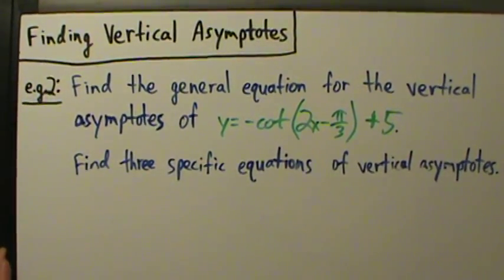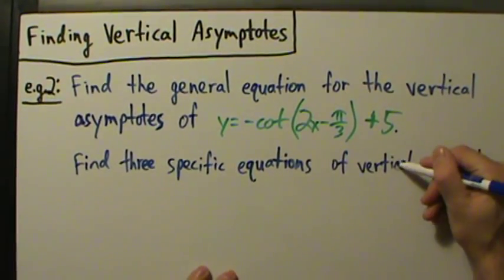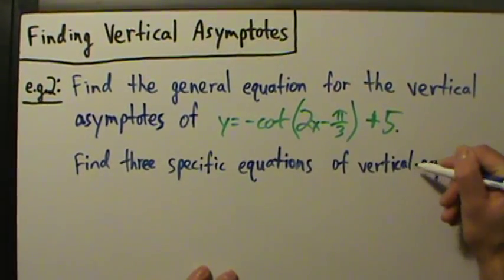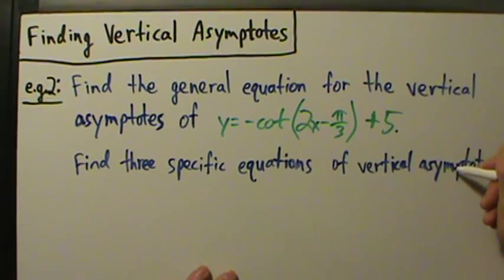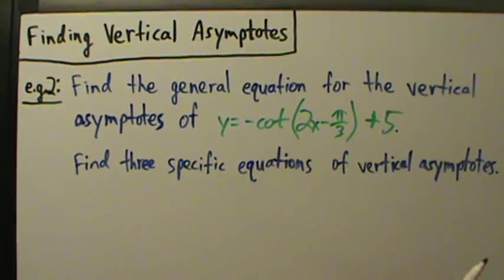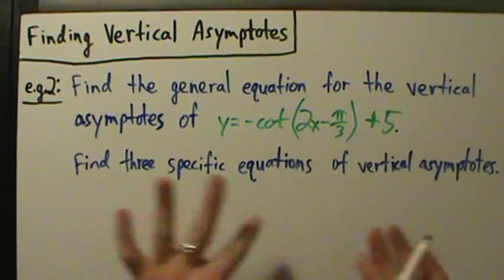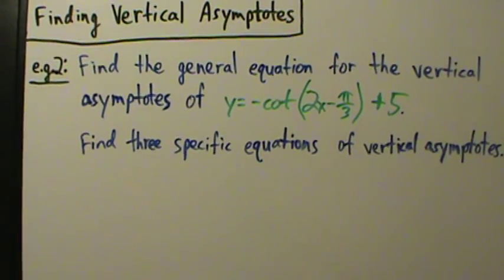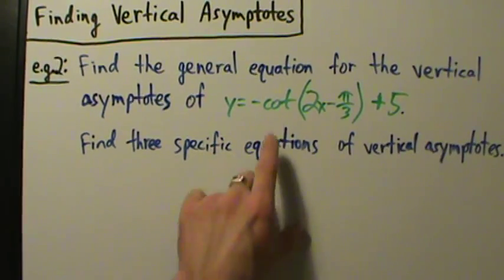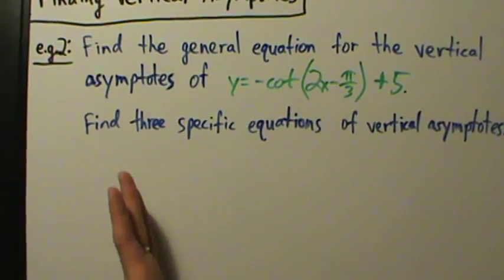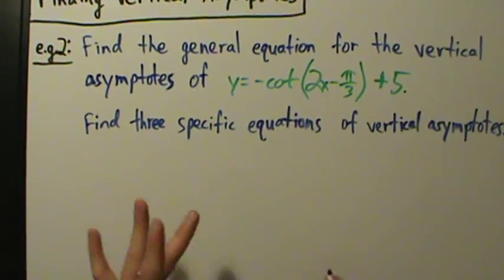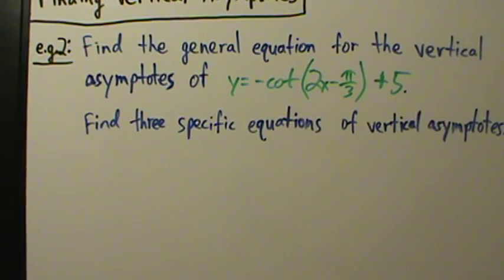What we want to do here is pretty much follow the same process as we did in example 1. There's only going to be one tiny difference, because here we have a cotangent function instead of a tangent function. So only one little thing changes — the numbers and formulas are going to change — but the process is literally identical.